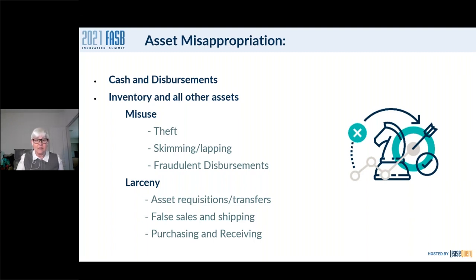If someone is committing kiting or lapping — moving money between checks with a longer float time between two different banks — being out of the office for more than a week means they're no longer making deposits, and one of those checks will actually bounce. That is exactly what happened. This large nationwide bank had a teller in the merchant cage who was kiting checks, relying on a two- or three-day clearing cycle through the Fed clearinghouses. They were caught while on vacation — something that never would have been caught if the bank didn't enforce consecutive vacation weeks.